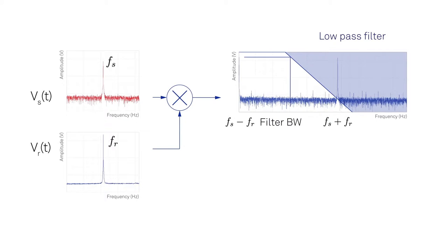The filter bandwidth, or the minus 3 dB point, is the cutoff frequency where signal power is attenuated by half. This bandwidth is inversely proportional to the time constant.